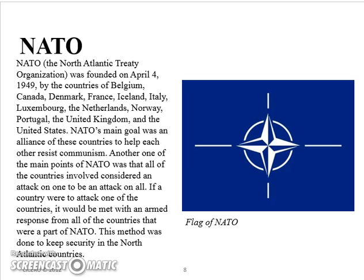The last thing we'll look at are the two groups that formed during the Cold War. The first is NATO — the North Atlantic Treaty Organization — founded on April 4, 1949, by Belgium, Canada, Denmark, France, Iceland, Italy, Luxembourg, Netherlands, Norway, Portugal, the United Kingdom, and the United States. NATO's main goal was to be an alliance of these countries to help each other resist communism. A key point of NATO was that all countries considered an attack on one to be an attack on all, met with an armed response from all members. NATO represents the capitalist alliance during the Cold War.